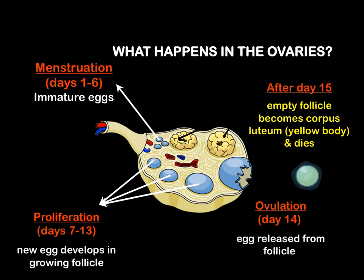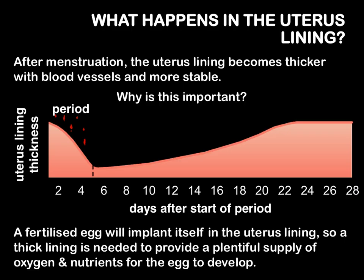Looking at the uterus lining: after menstruation, the uterus lining becomes thicker with blood vessels and more stable. This is important because the fertilised egg will implant itself into the uterus lining, and a thick lining is needed to provide a plentiful supply of oxygen and nutrients for the egg to develop. If the egg isn't fertilised and we go through the menstruation period, the uterus lining is quickly removed before being built up again.